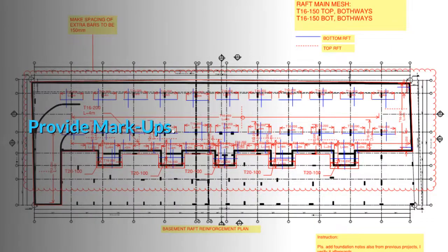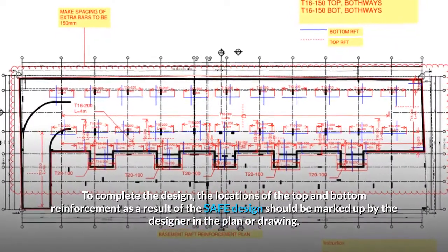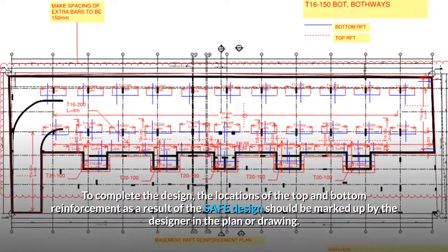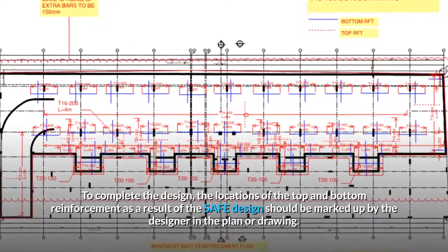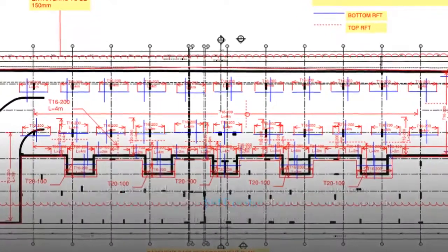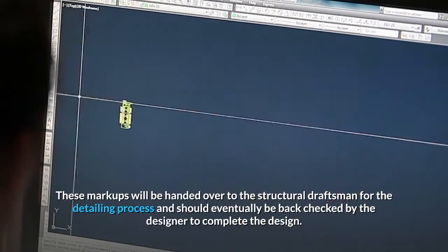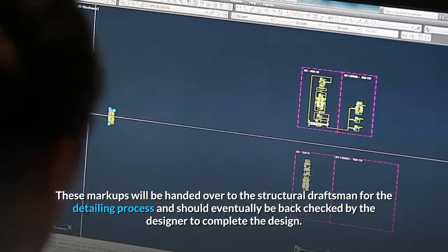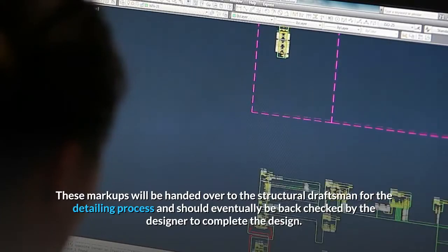Provide markups. To complete the design, the locations of the top and bottom reinforcement as a result of the safe design should be marked up by the designer in the plan or drawing. These markups will be handed over to the structural draftsman for the detailing process and should eventually be back checked by the designer to complete the design.